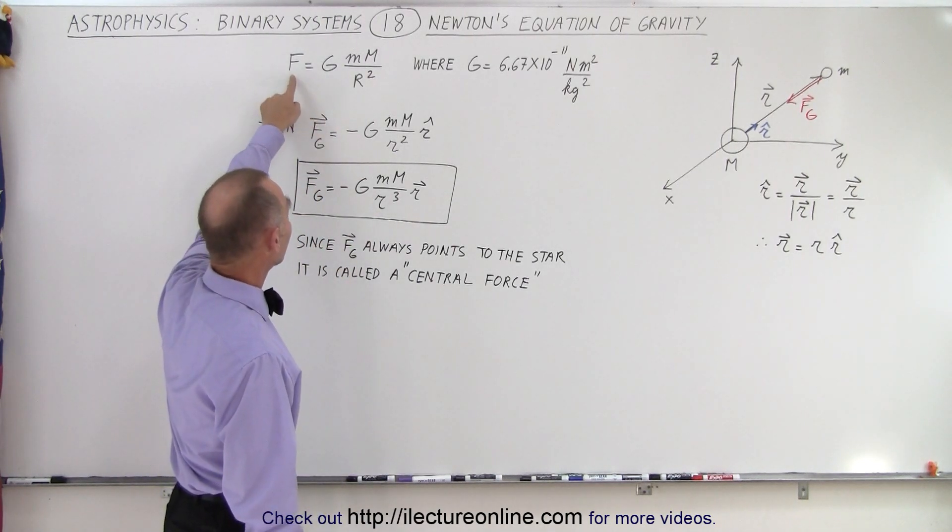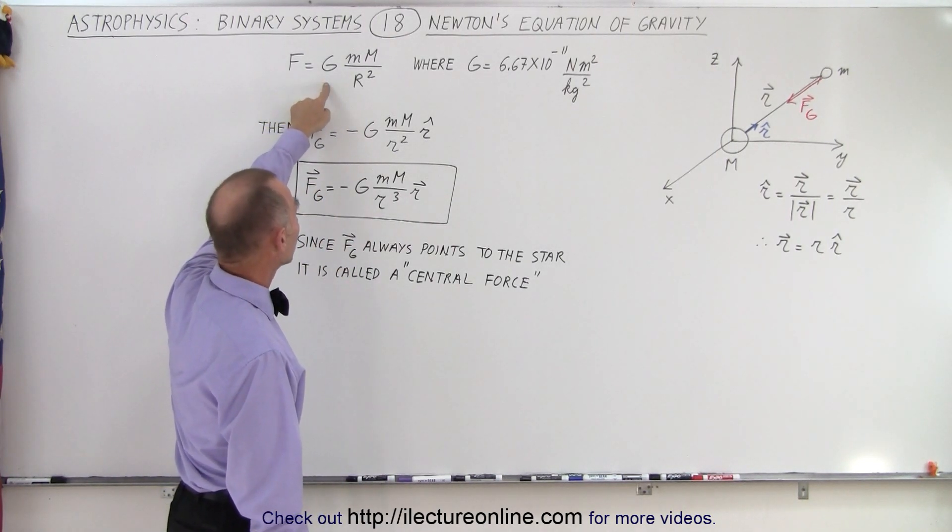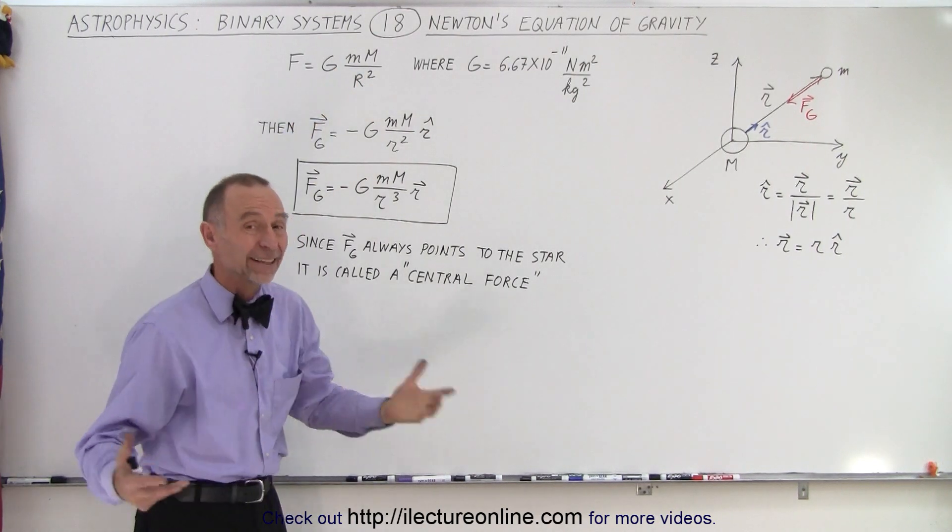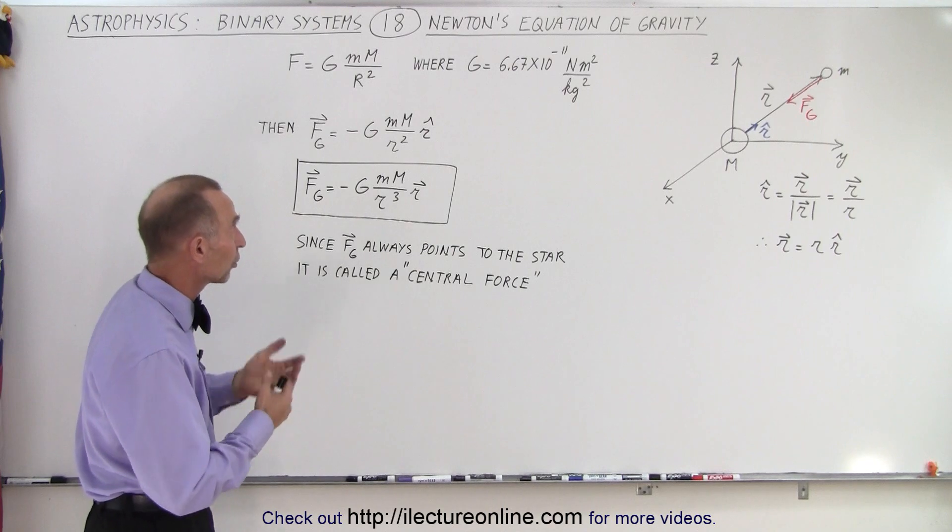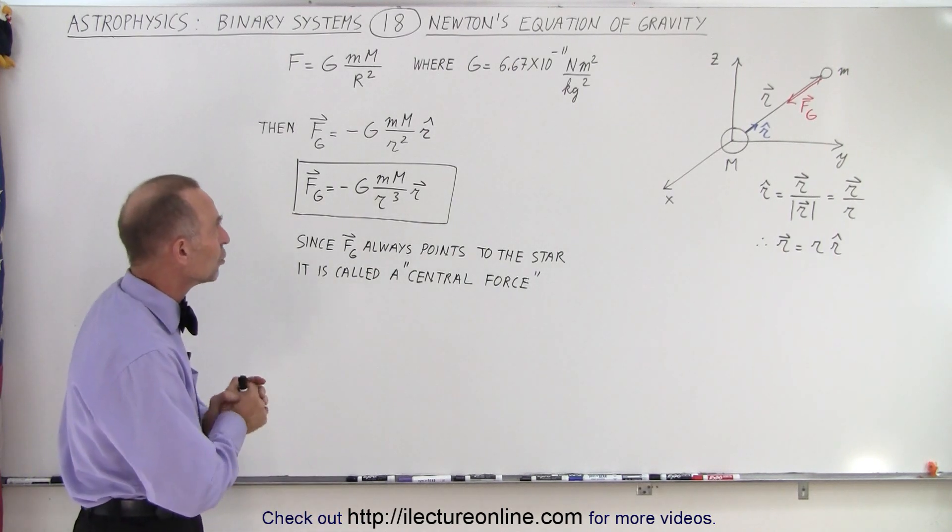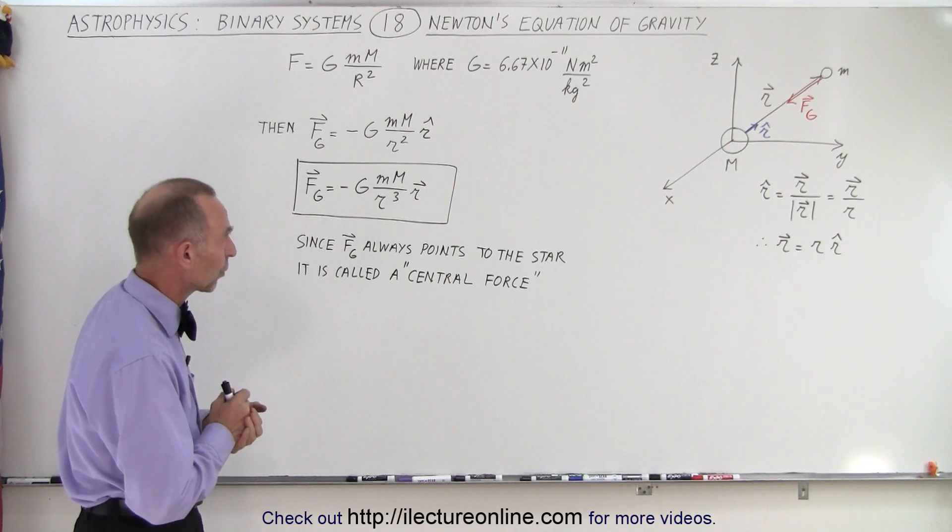And this is how we typically see it: the force is equal to G, the gravitational constant, times the product of the two masses divided by the distance between the two objects squared, where G is defined as 6.67 times 10 to the minus 11 newton's meter squared per kilogram squared.